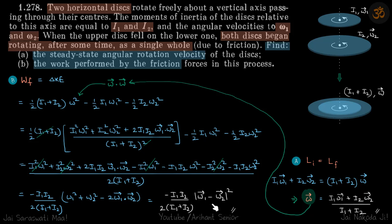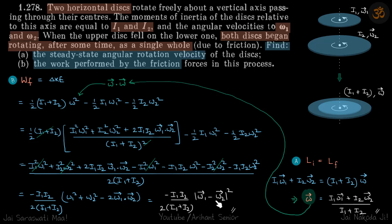This is quite an interesting result. If ω₁ and ω₂ are the same and you stick the disks together, there is no sliding, so work done by friction must be zero — and that's exactly what the formula gives. If ω₁ is in the opposite direction to ω₂, friction acts maximally, giving the maximum work done by friction for the same magnitudes of ω₁ and ω₂.